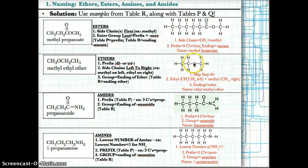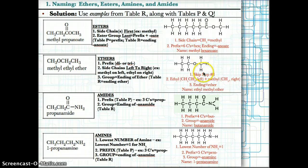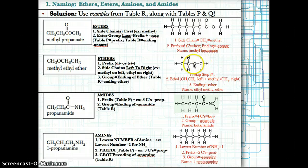Let's try another example. We have CH3-CH2 on the left and CH3 on the right. Since we don't have two or three of the same side chains, we skip step one. Naming left to right: CH3-CH2 on the left is ethyl, and CH3 on the right is methyl. So far we have ethyl-methyl. The ending must be ether because there's an O in the middle. So the full name is ethylmethylether.